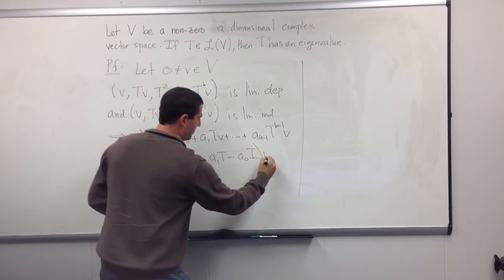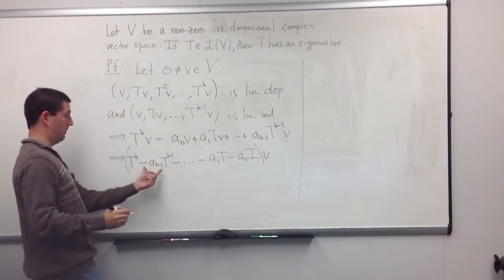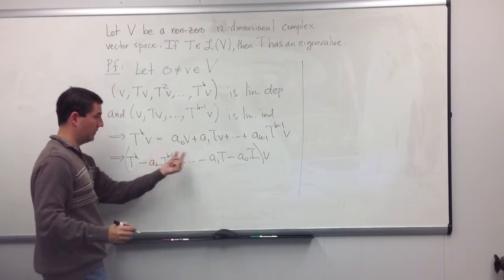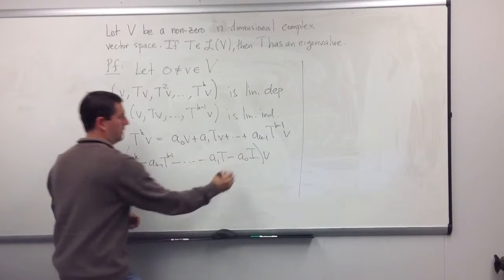And if we apply this to v, notice we get T^k v and minus a_(k-1) T^(k-1) applied to v, and so forth. This should equal 0.